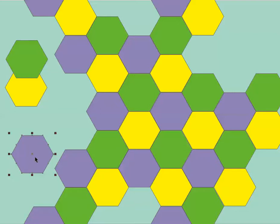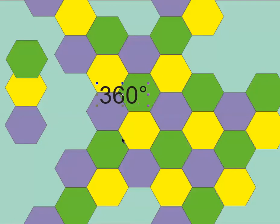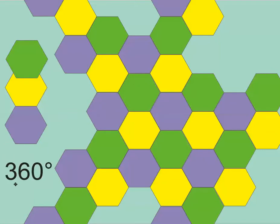We know we can tessellate — you might remember from lesson 12.1 — if the angles where the polygons join equal 360 degrees. And of course, that's what 120 times 3 equals: 360 degrees. So we do have that in our polygons here.